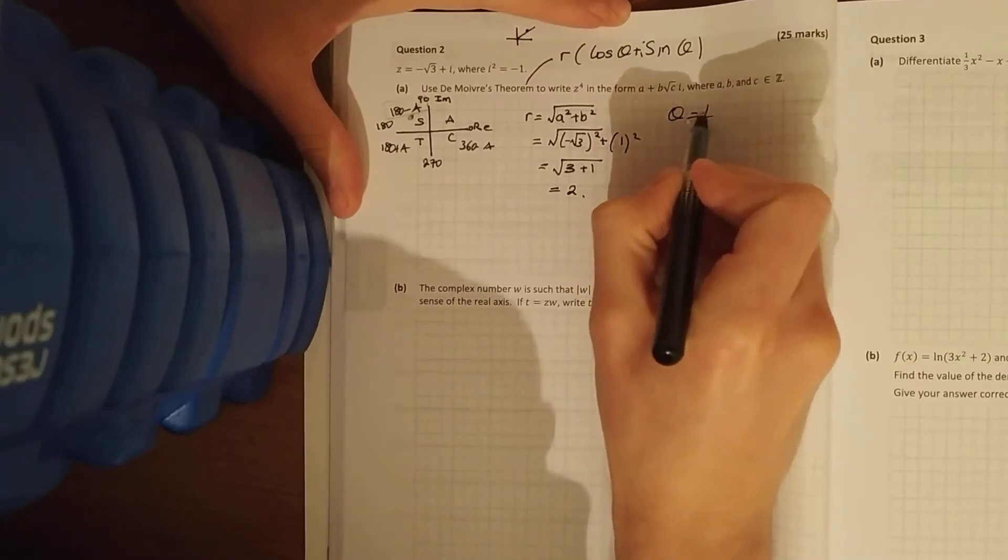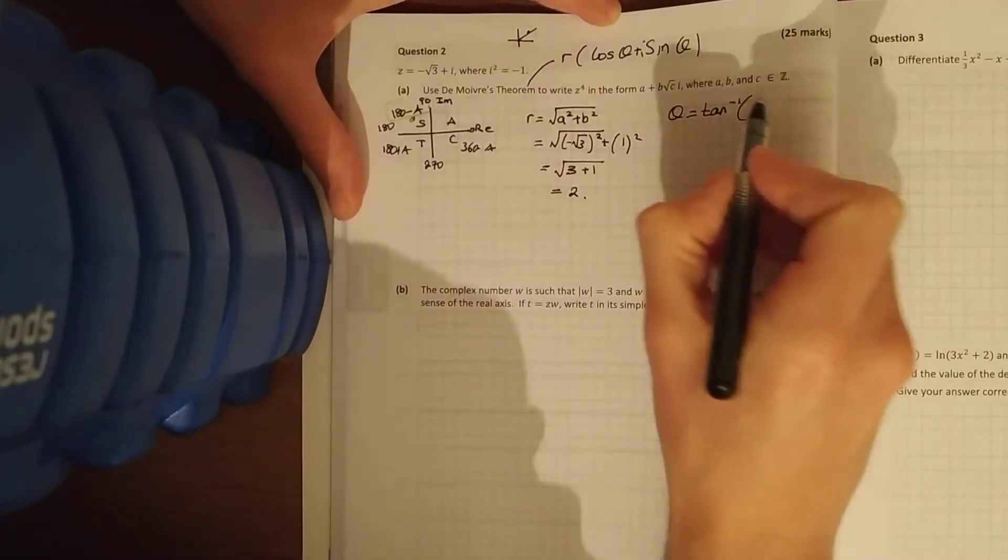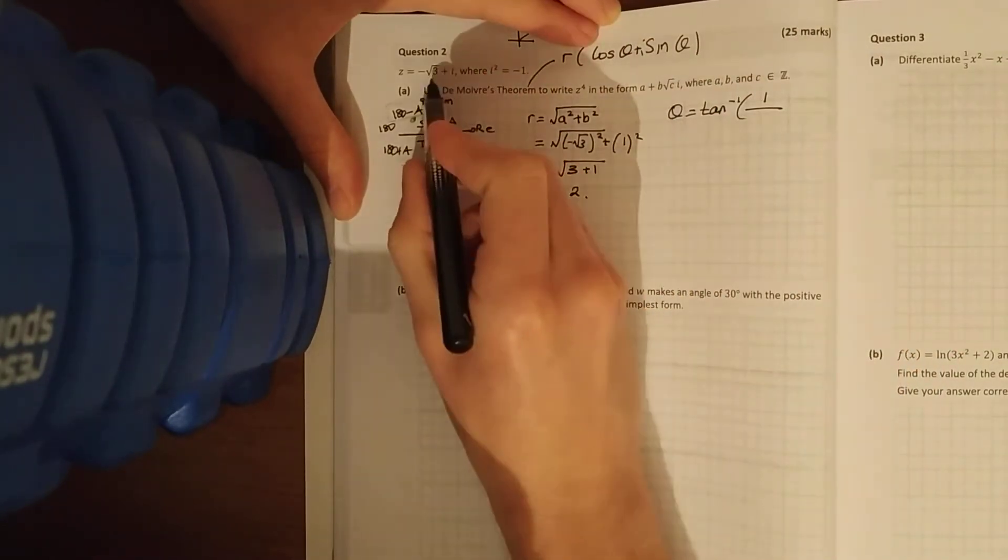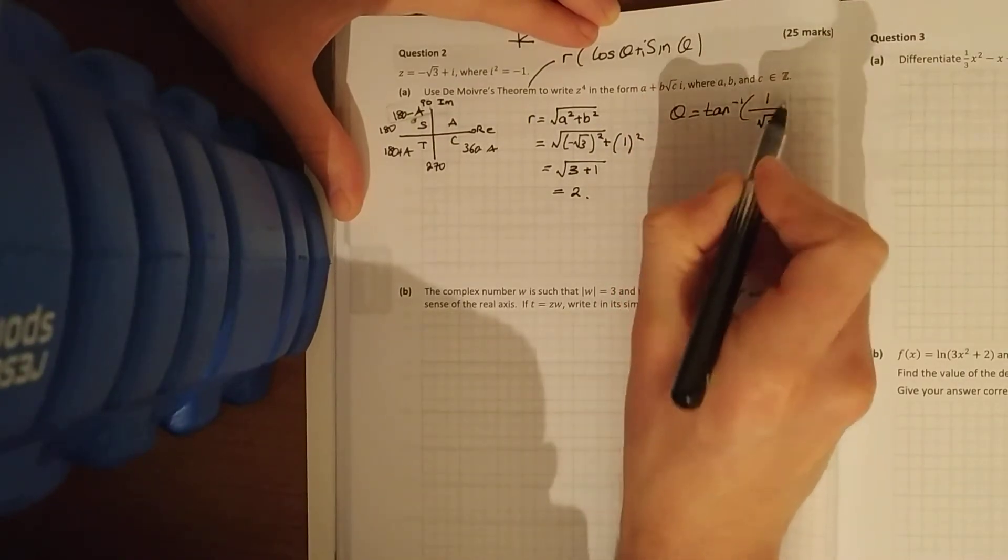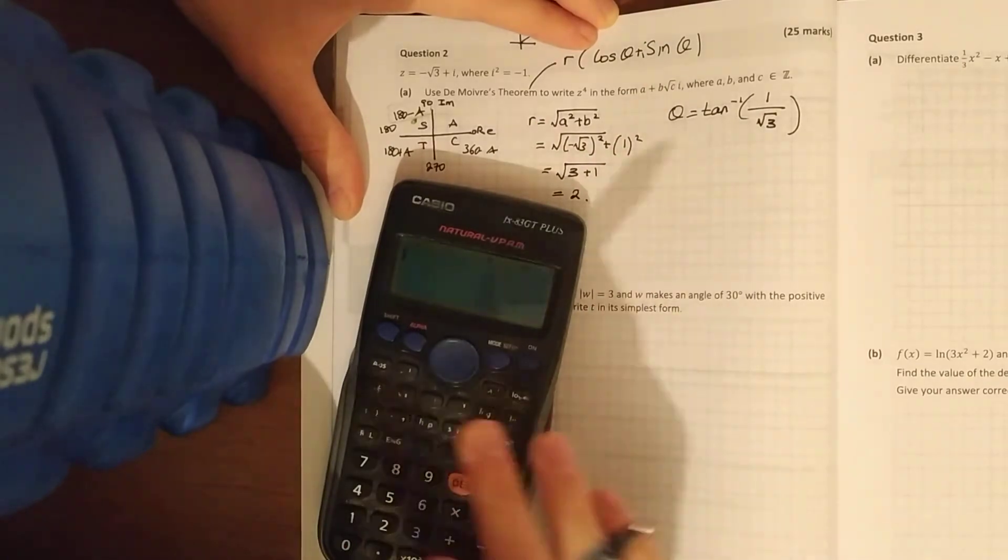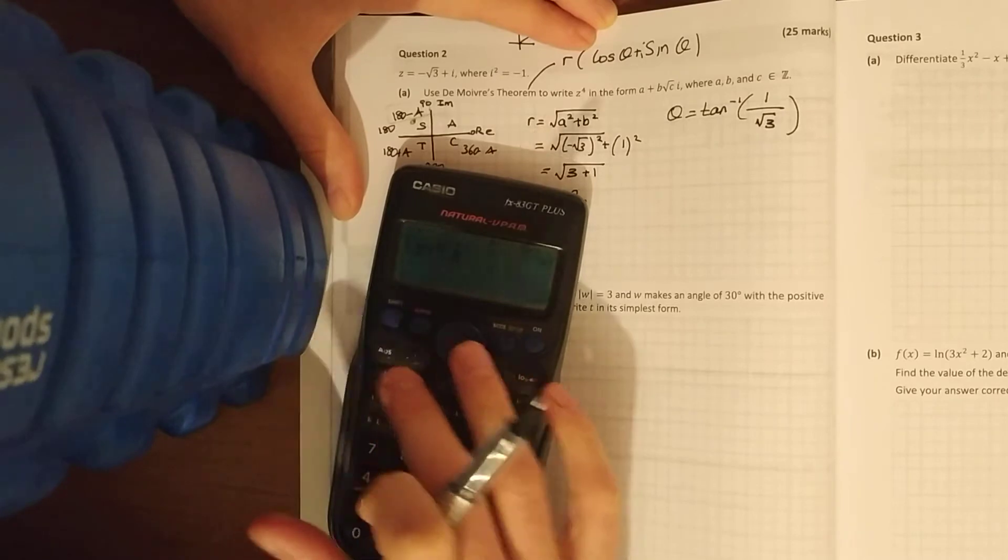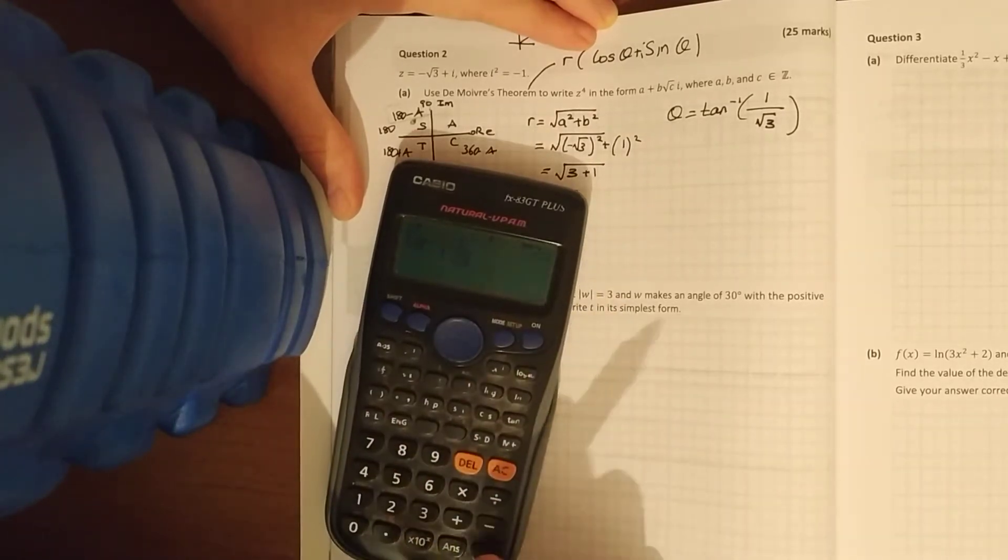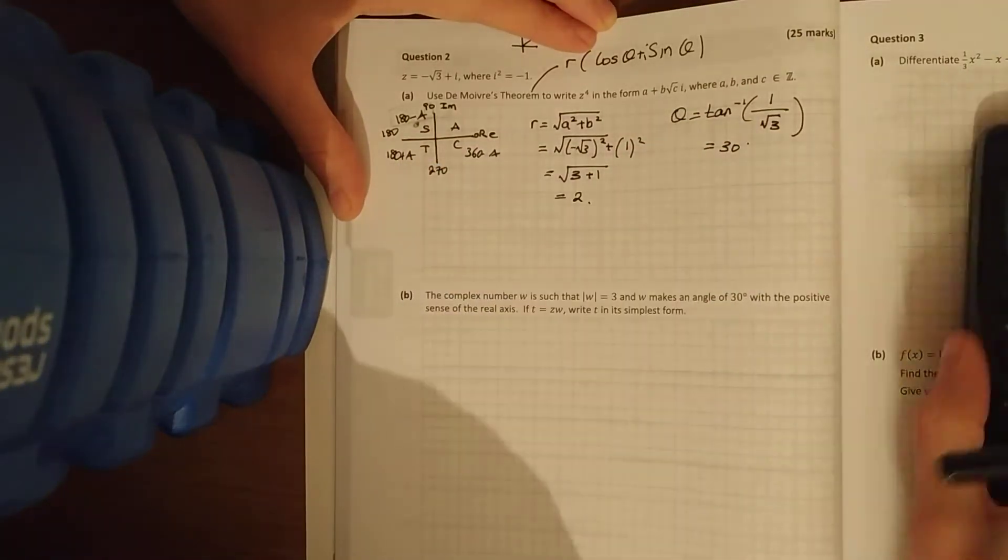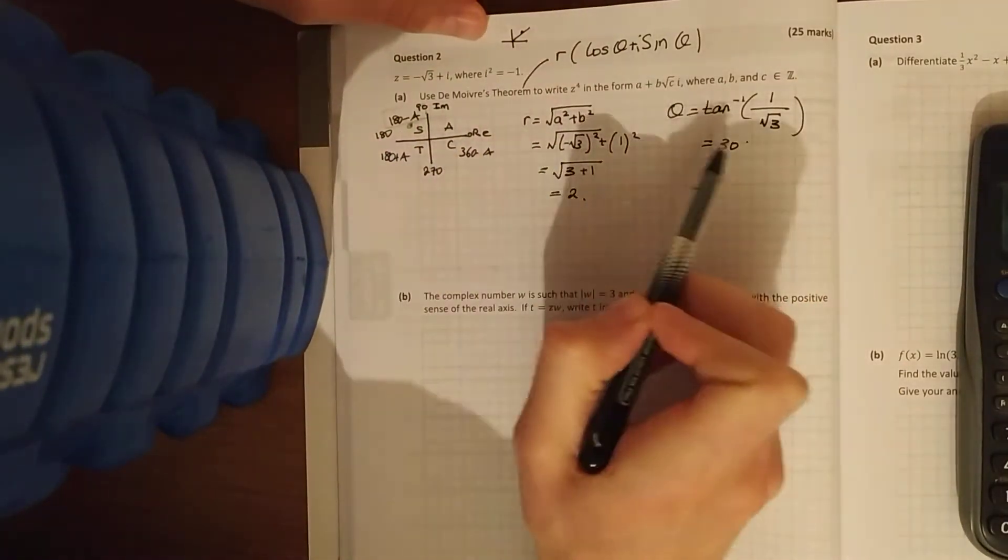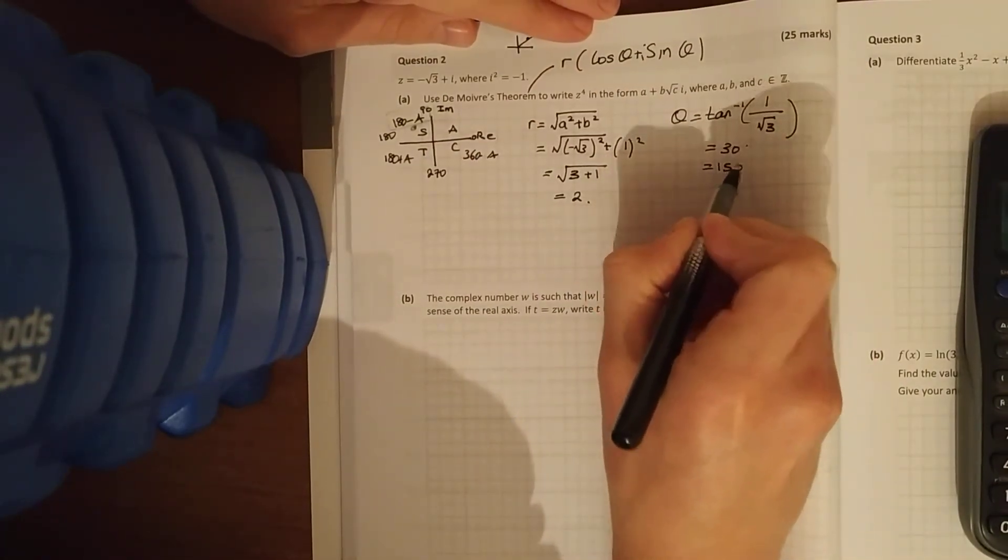And for your argument, it's tan inverse imaginary over your real, your imaginary is 1 over, ignore the minus, that's just telling you it's in the sine region, over your real tan inverse 1 over root 3. Now you can use your formula book for something like that, I don't have mine with me. Make sure your calculator's in degrees, 1 over root 3, 30 degrees, and then to actually get the angle now, there's your reference angle, to get the angle it's 180 minus alpha, so it's going to be 150 degrees.